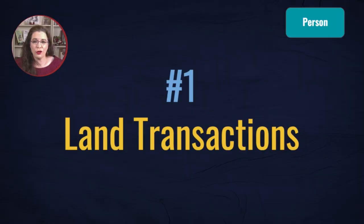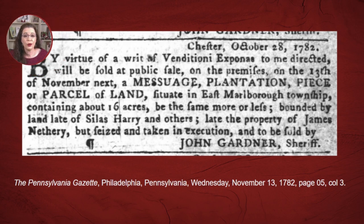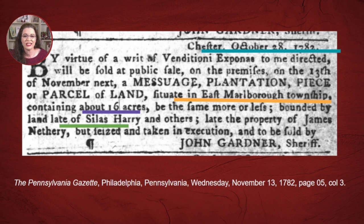A great feature about newspapers is that they will often document the transfer of land from one person to another. Land transactions appear in some of the earliest newspapers in existence. So when you find a land transaction, you will often find the date that the transaction took place, an explanation of the parcel of land, where it is located, how large the property is, and how many upgrades or amenities the property has. You may also find out the identity of the previous owner or owners and whether they are living or deceased.